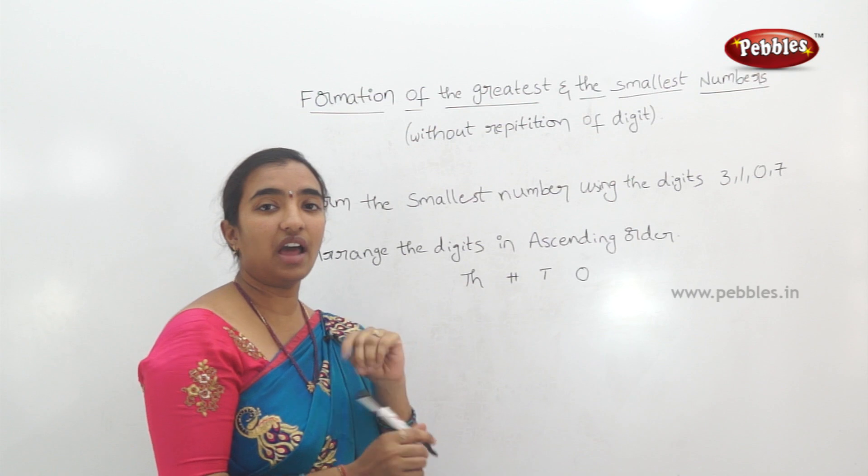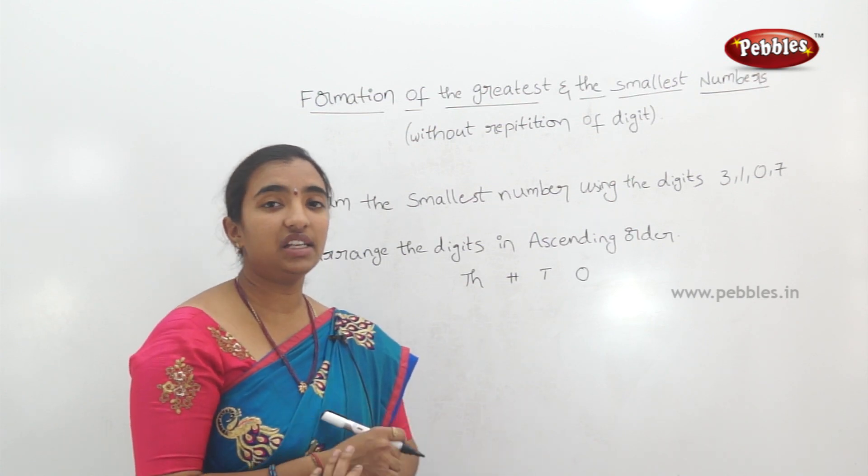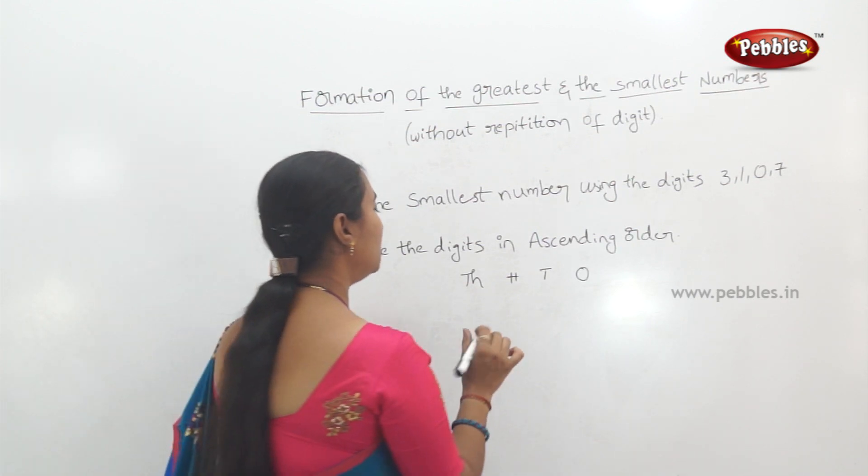The digits in ascending order are: 0, 1, 3, 7.